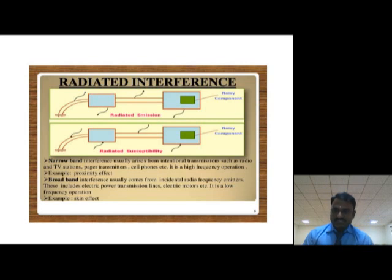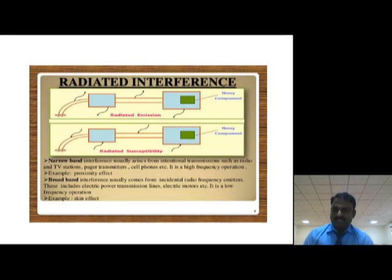Now we are going to see about radiated interferences. We have radiated emission and radiated susceptibility. In radiated emission, due to the presence of a noisy component in the subsystem, it acts as the source of interferences. The radiation from that noisy component will affect the nearby subsystem — this is called radiated emission, meaning the interference is getting radiated from the noisy component.